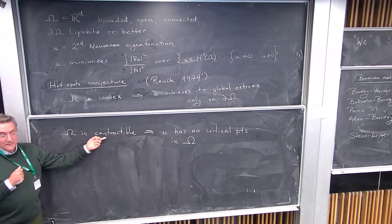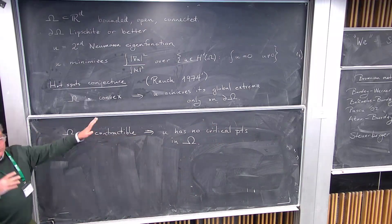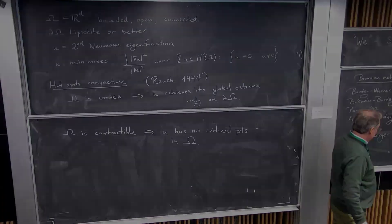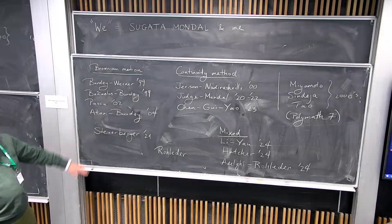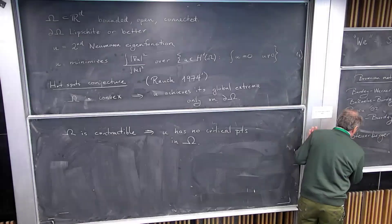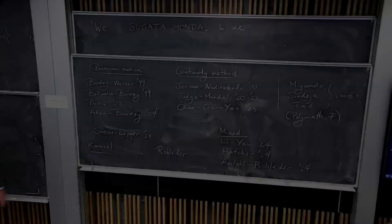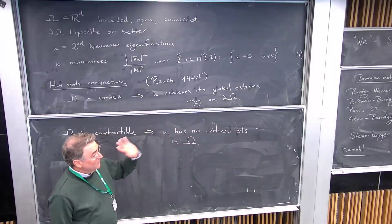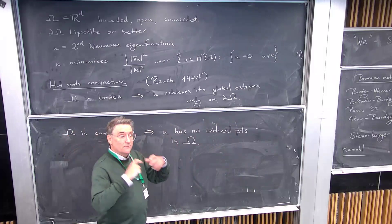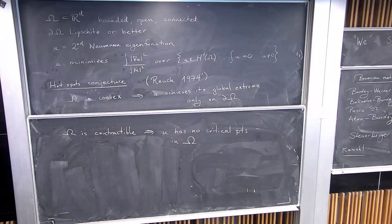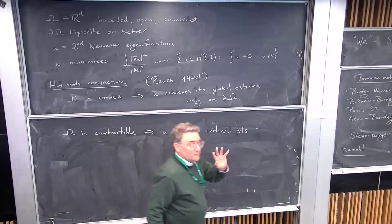In 2D, which is really what we want to discuss — essentially all these results are 2D — contractible means simply connected, i.e., no holes. There is some early work by Kawohl in higher dimensions, but basically everything is in 2D. In higher dimensions, the right condition is probably contractible.